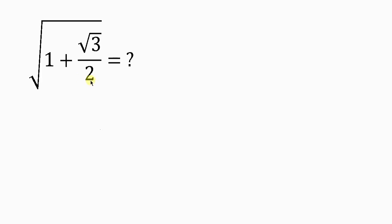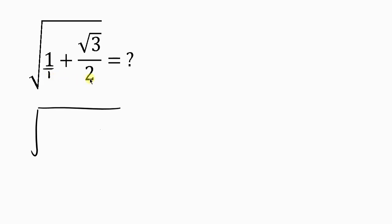Our first step will be to combine the fraction inside of the radical. And in order to combine the fraction, I'm going to be putting 1 over 1 here. So this becomes the square root of — now to combine fractions, we need to find the LCM of the denominator. So what's the LCM of 1 and 2? The LCM of 1 and 2 is 2.